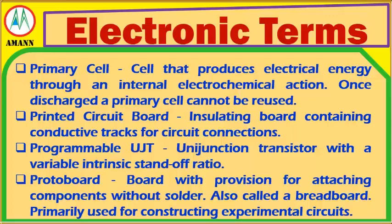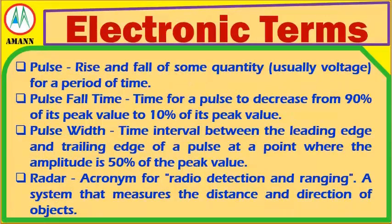Programmable UJT: a unijunction transistor with a variable intrinsic standoff ratio. Protoboard: a board with provision for attaching components without solder, also called a breadboard. Primarily used for constructing experimental circuits. Pulse: a rise and fall of some quantity for a period of time.